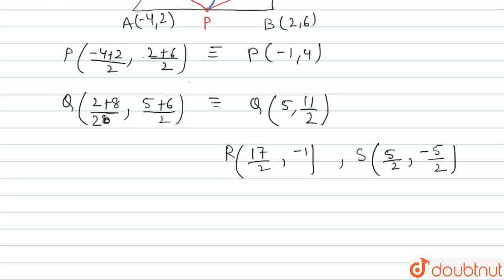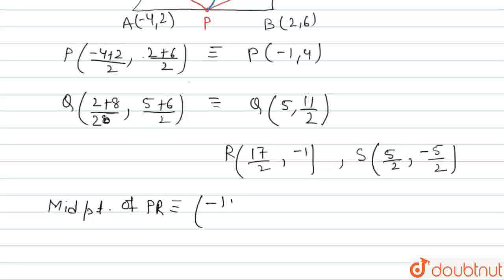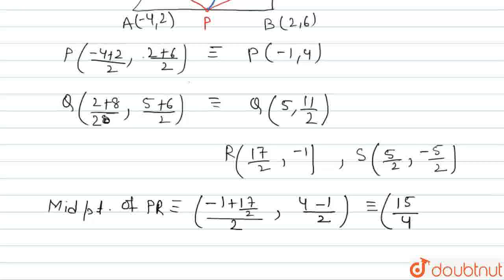We know the coordinates of P and R, so the midpoint of PR will be: ((-1 + 17/2)/2, (4 + (-1))/2), which equals (15/4, 3/2).